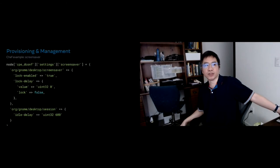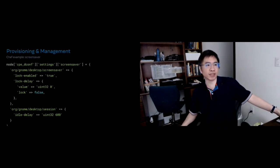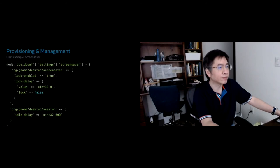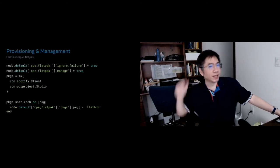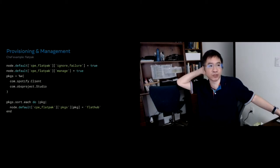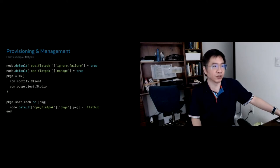Here are some examples: you can use a cookbook to set dconf settings on a GNOME desktop to configure the screensaver. Another example — the cookbook is open source — is specifying which Flatpak applications you want installed on a machine.